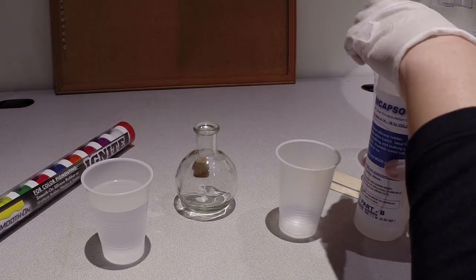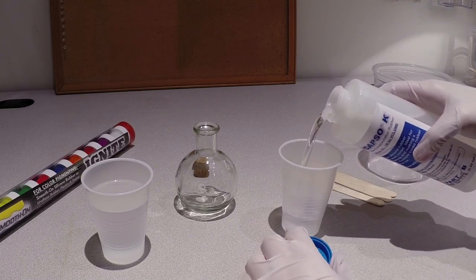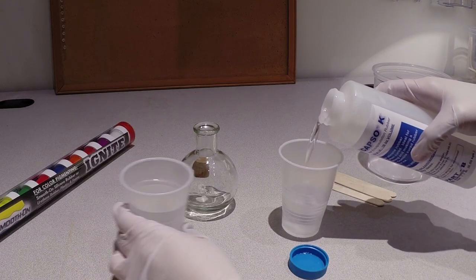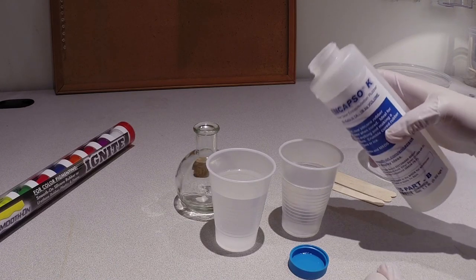Encaps-O-K is a Ten-Cure Silicone that's mixed one-to-one by volume. The part B is very low viscosity, very easy to pour, and we've got it right about to the same height. Perfect.